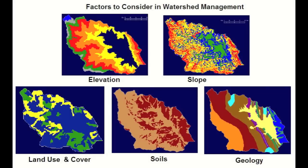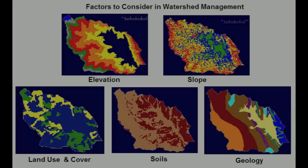When working at the watershed scale, elevation, slope, and other factors presented here should be considered. Building a Geographic Information System, or GIS, is an appropriate first step.